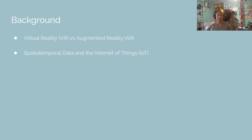GIS makes use of spatiotemporal data — geographical data that moves or changes throughout time. Oftentimes, this data comes from the Internet of Things, which is the physical network of devices with sensors that collect the data.